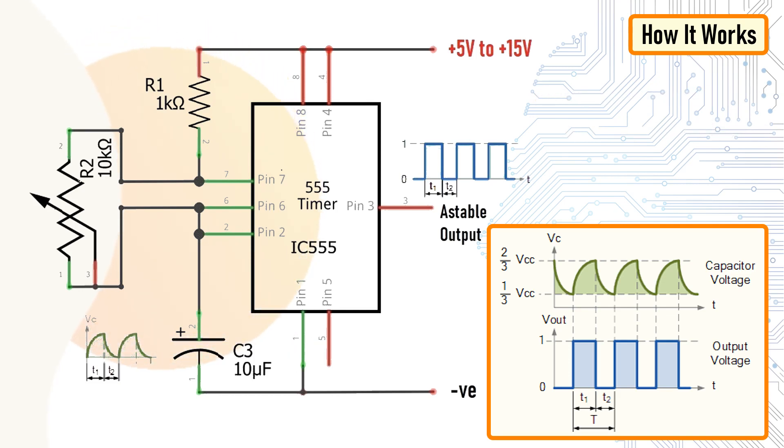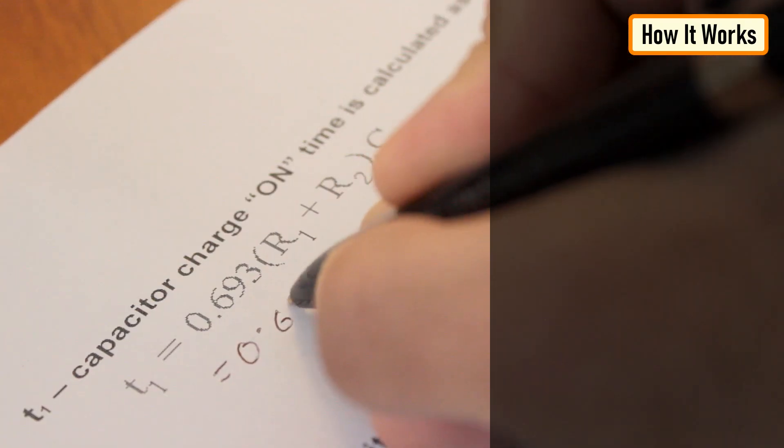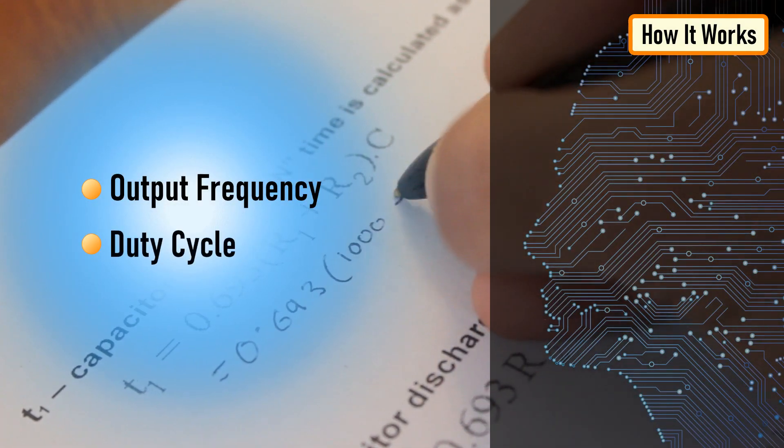The off time depends on the capacitor C3 and the right side of the port. Now, let's calculate the output frequency and the duty cycle of the output waveform.